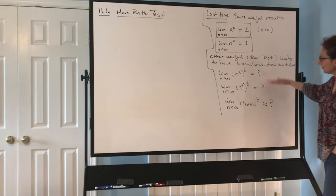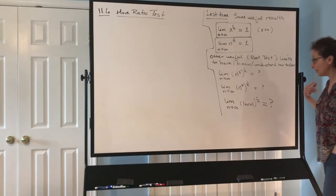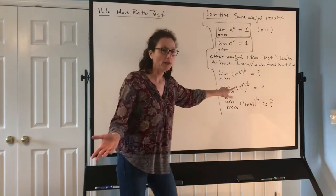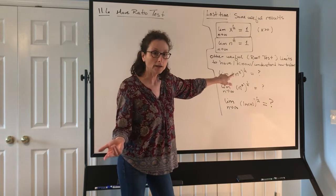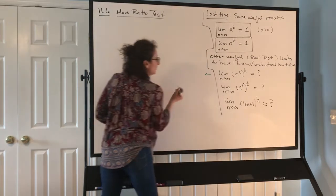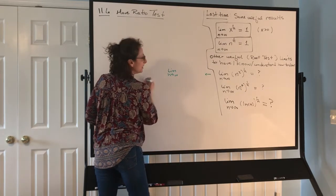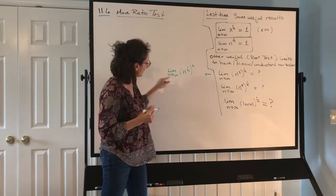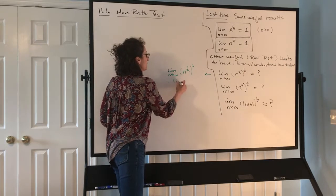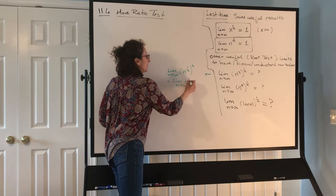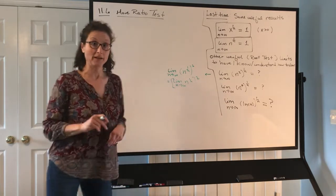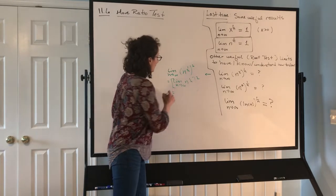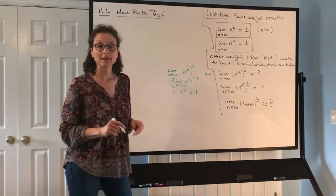It's also useful to have a handle on these related limits that come up quite a bit. Let's see if you can reason through this one: the limit as n goes to infinity of n² to the 1/n. Would that be equivalent to the limit of n to the 1/n, quantity squared? By the power law for limits, the limit of a thing squared is the limit of the thing, squared — as long as that limit exists. Therefore, this limit is also 1.